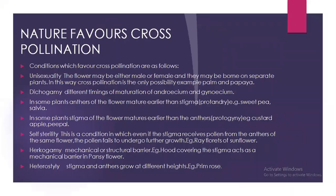How does nature favor cross-pollination? Number one is unisexuality: the flower may be either male or female, borne on separate plants, making cross-pollination the only possibility — for example, palm and papaya. Number two is dicogamy: different timings of maturation of androecium and gynoecium. In some plants, anthers mature earlier than the stigma — that condition is called protandry. Example: sweet pea. In some plants, the stigma matures earlier than the anthers — that is called protogyny. For example, custard apple.